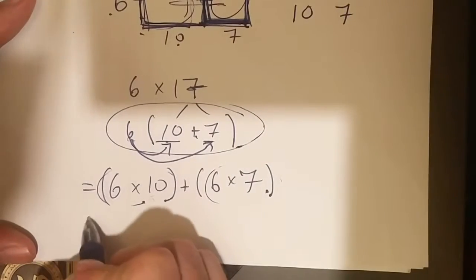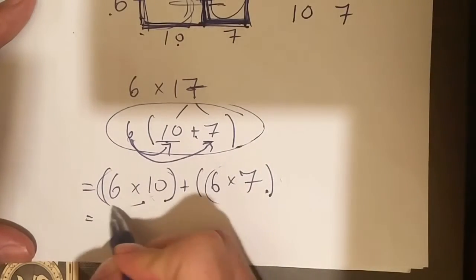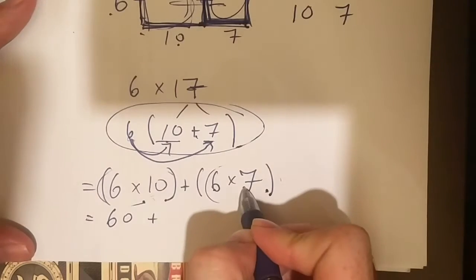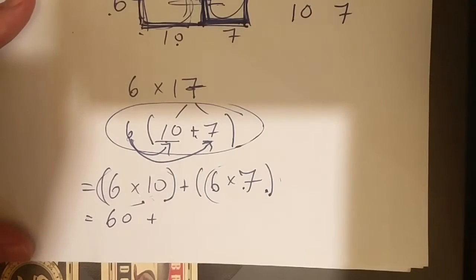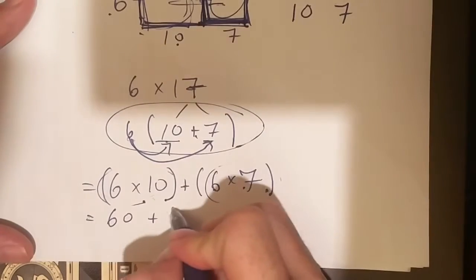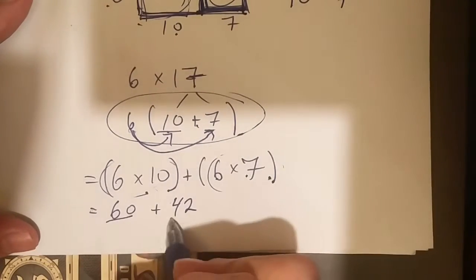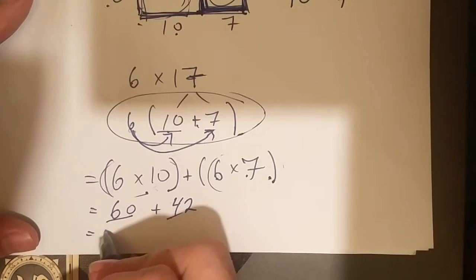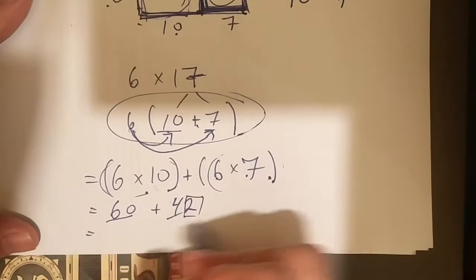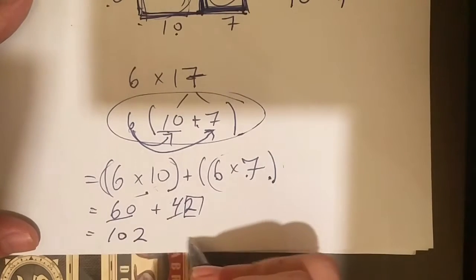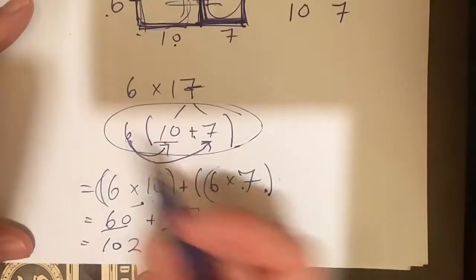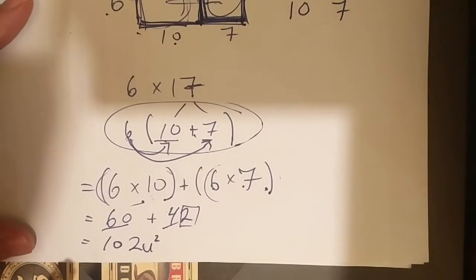So let's do that. Down here I have 6 times 10. 6 times 10 is, of course, 60, plus 6 times 7. 6 times 7, what's 6 times 7? Good thing I know my multiplication tables, and that is 42. Add them both together. 60 plus 40, that is 100, plus I have this 2 over here, so it's 102. And there we go. So my area for this whole thing would be 102 square units.